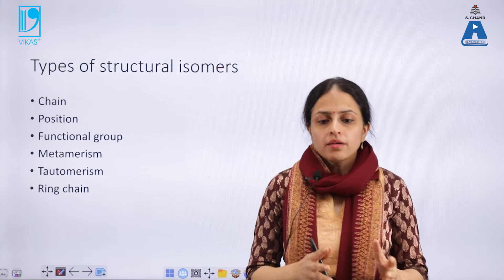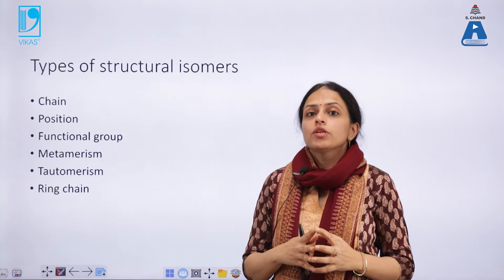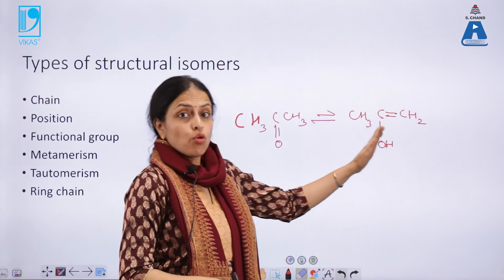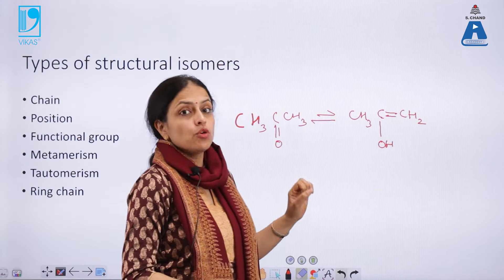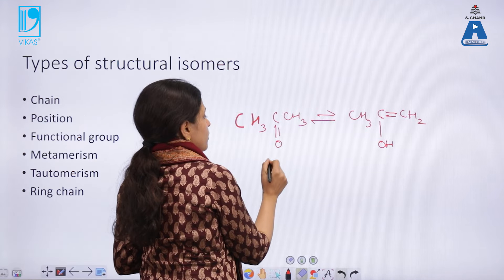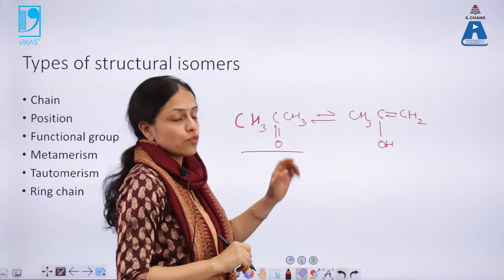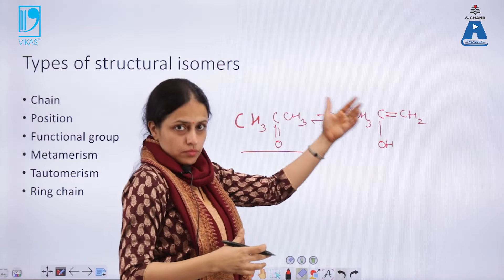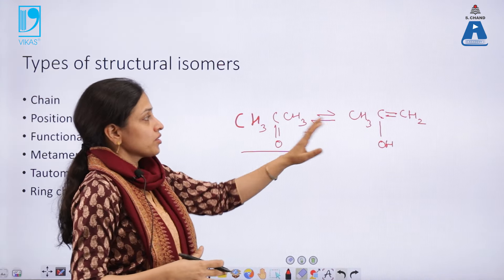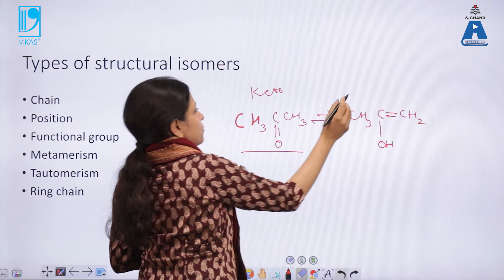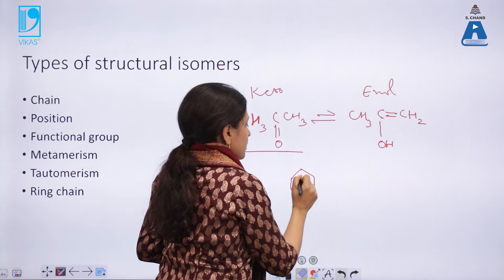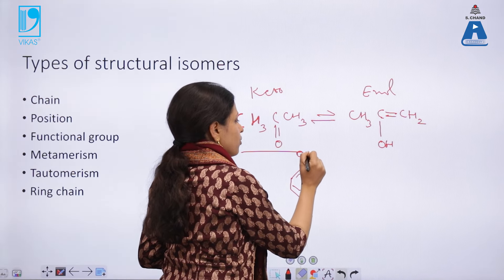The next are tautomers — another kind of structural isomer explained by the formation of two different isomers from the same compound. Here you can see two structures of acetone: the first is the keto form and the other is the enol form. The keto form is the predominant form that occurs in nature. Phenol also shows keto-enol tautomerism, but in phenol's case the enol form is more predominant rather than the keto form.